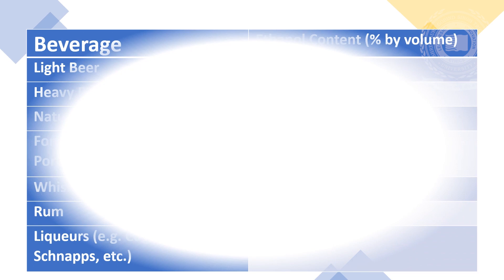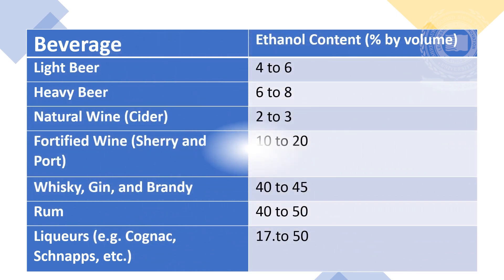This table shows the different alcoholic beverages and the ethanol content percent by volume. Light beer has 4–6% ethanol, heavy beer has 6–8%, natural wine includes 2–3% alcohol, fortified wine which includes sherry and port has 10–20% alcohol, whiskey, gin and brandy have 40–45% alcohol, and the highest percentage of alcohol is found in rum at 40–50%. Other liquors like cognac and schnapps include 17–50% alcohol by volume.